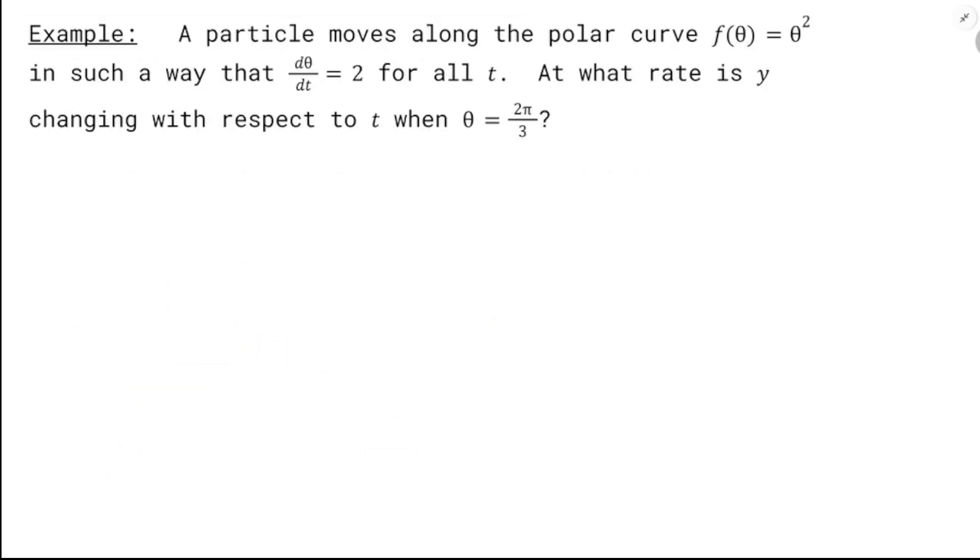All right, now here's another one, and so maybe it got a little bit more complexity to it, so we're going to have a particle still moving along a polar curve, and this one's f(θ) equals θ² in such a way that dθ/dt is 2 for all t, and they're going to ask us at what rate is y changing with respect to t when θ equals 2π/3.